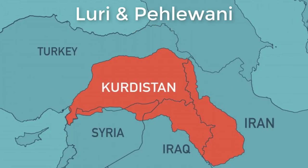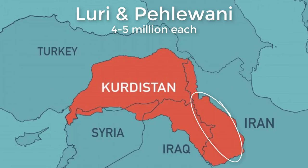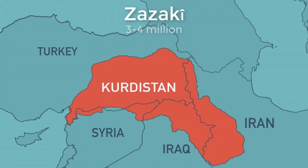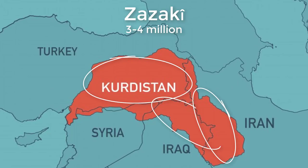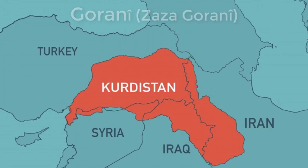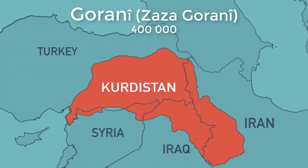Luri and Pehlawani each have about 4 to 5 million speakers. The Luri dialect is spoken in Iranian occupied Kurdistan, while the Pehlawani dialect is spoken in both Iranian and Iraqi occupied Kurdistan. The Zazaki dialect is spoken by around 3 to 4 million people, mostly in Turkish occupied Kurdistan, but also in Iranian and Iraqi occupied Kurdistan. There are also about 400,000 Gorani speakers, who belong to the Zaza-Gorani subgroup of the Kurdish language family, living mostly in the Zagros mountain areas. The Haurami dialect is also included in the Zaza-Gorani subgroup.